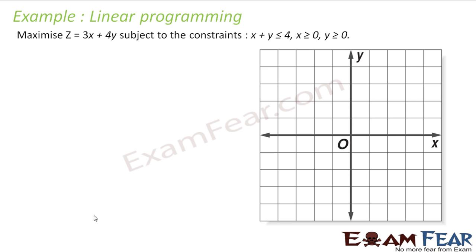So let us solve this. For x plus y less than 4, we first form the equation x plus y equals 4. You put x equal to 0, you get y equal to 4, so you get the point (0, 4). You put y equal to 0, you get x equal to 4, so (4, 0) is a point. This gives us our line.